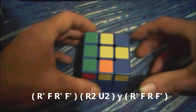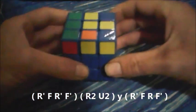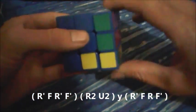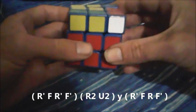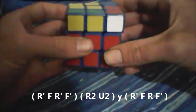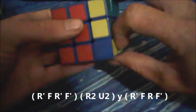You may as well do a few more examples. So we go R' F R' F' R2 U2 while doing the Y, into the sledgehammer R' F R F'.